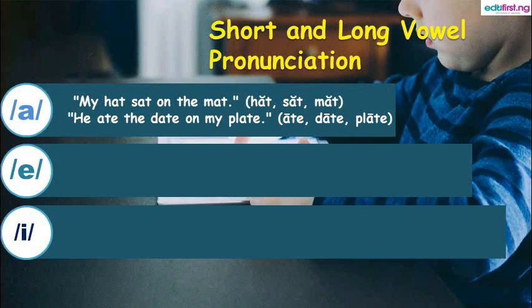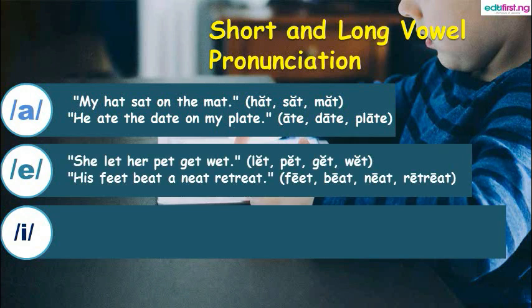Then we go to the E sound. For the short E: She let her pet get wet — let, pet, get, wet. You can notice the little curve at the top of the vowel sound which signifies the short vowel pronunciation. For the long E: His feet beat a neat retreat — all contain long vowel pronunciation.